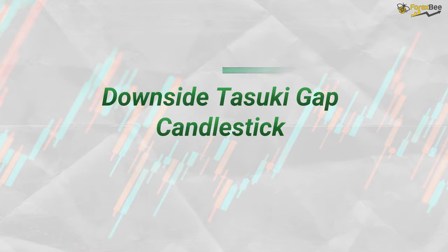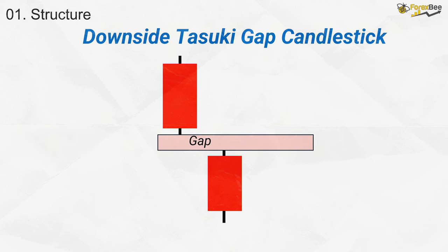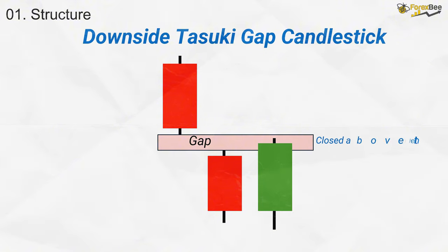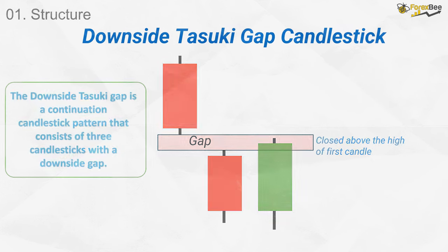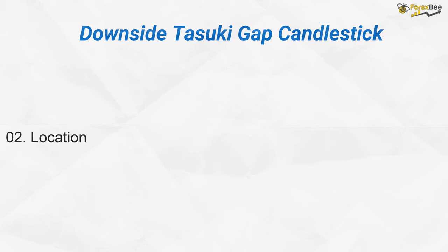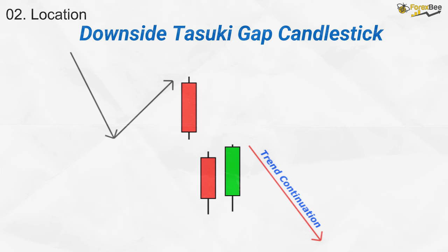Next, let's talk about the downside Tasuki Gap candlestick pattern. Its structure consists of three candles. The first is a strong bearish candlestick indicating significant selling pressure. The second is another bearish candle that opens with a gap down, further reinforcing the ongoing downtrend. The third candle is a bullish one that partially fills the gap created by the second candle, but fails to close it entirely. This pattern typically appears in a downward trend, and the inability of the bullish candle to close the gap confirms that sellers are still in control, suggesting the downtrend is likely to continue.